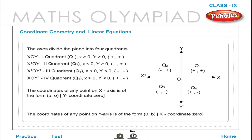The axes divide the plane into four quadrants. XOY is the first quadrant Q1 where x > 0 and y > 0 (plus, plus). X'OY is the second quadrant Q2 where x < 0 and y > 0 (minus, plus). X'OY' is the third quadrant Q3 where x < 0 and y < 0 (minus, minus). XOY' is the fourth quadrant Q4 where x > 0 and y < 0 (plus, minus).